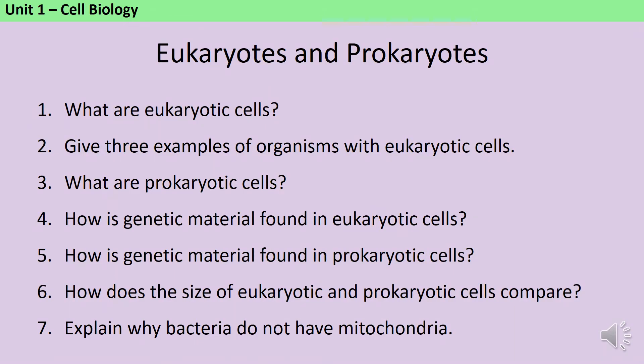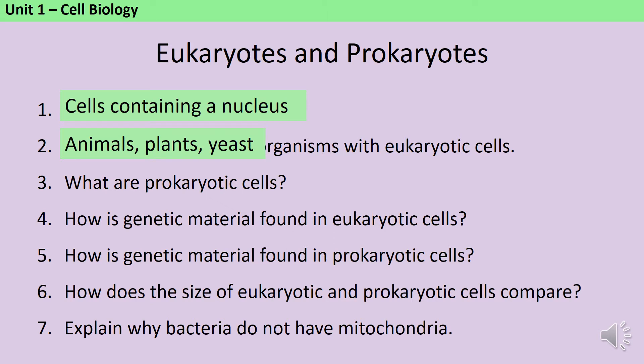Eukaryotic cells are those that contain a nucleus and other membrane-bound subcellular structures. Animal cells, plant cells and yeast cells are all examples of eukaryotic cells.